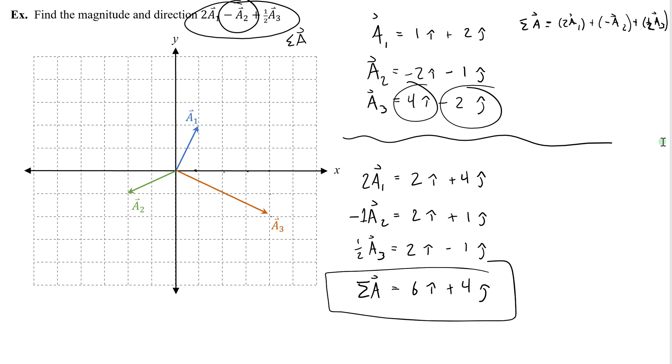Finding the magnitude is easy. Well, first let's graph it. 6, 4. So 1, 2, 3, 4, 5, 6, and 1, 2, 3, 4. So that is our odd sum of these strange scaled vectors.